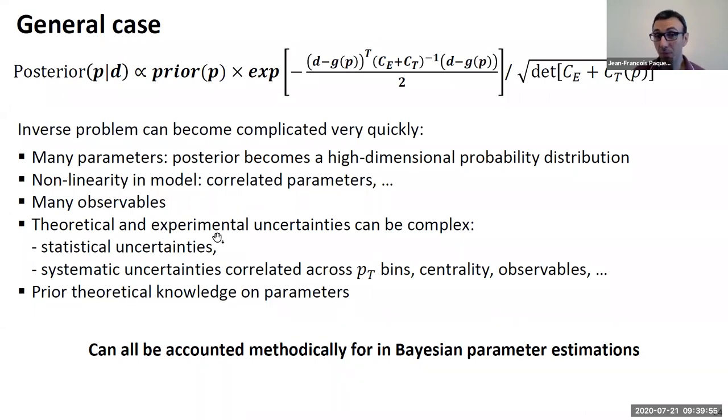Of course, you'll have many observables in heavy-ion collision we can use. Depending on if you consider, for example, different centralities and different PT bins as different observables, you can be using 50 to hundreds of essentially observables to constrain your parameters.